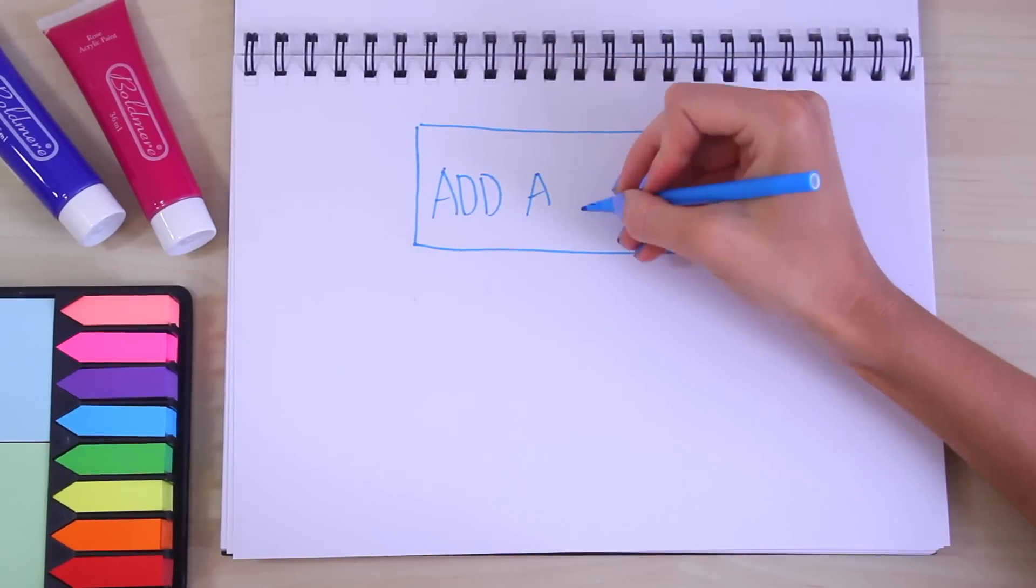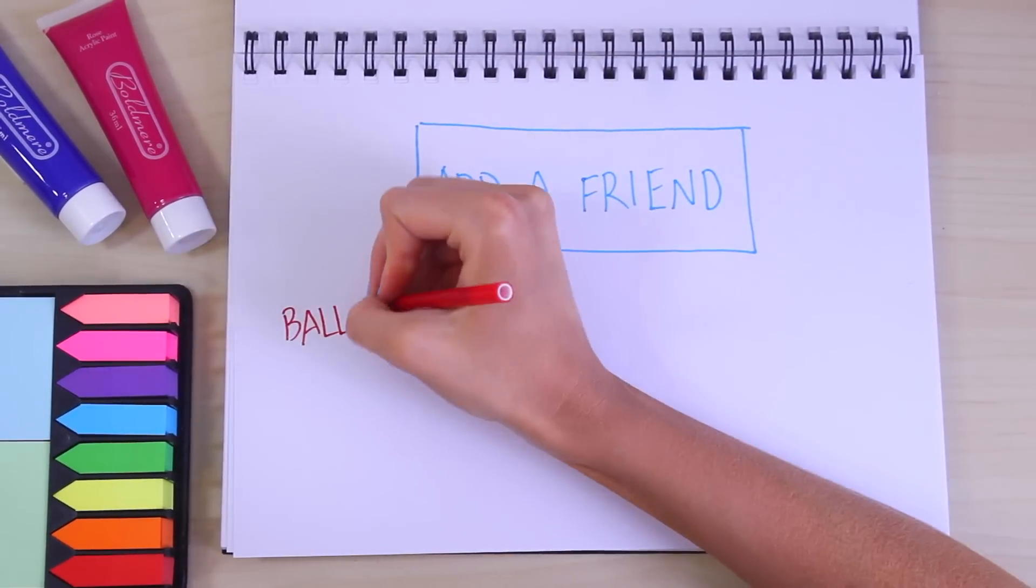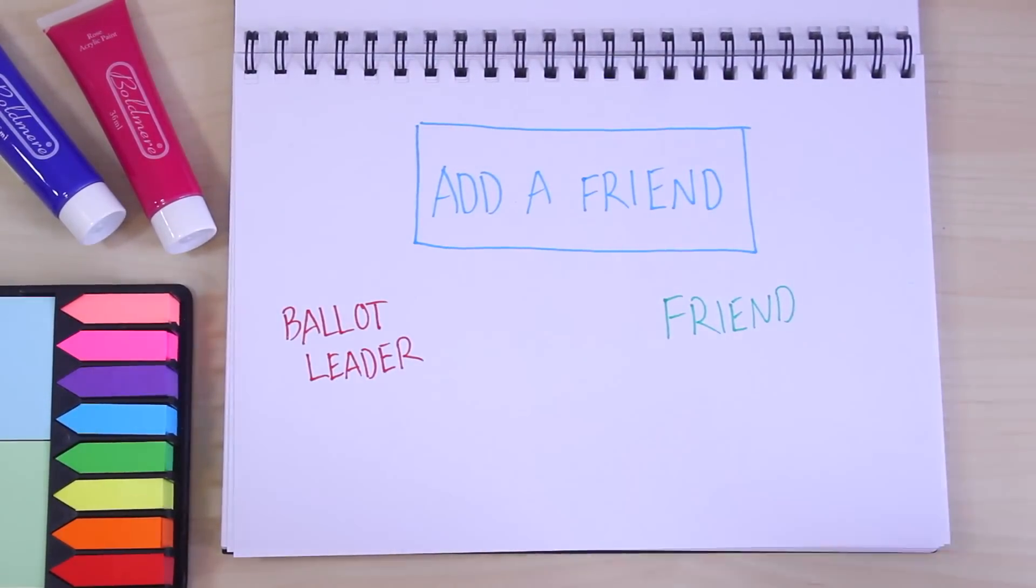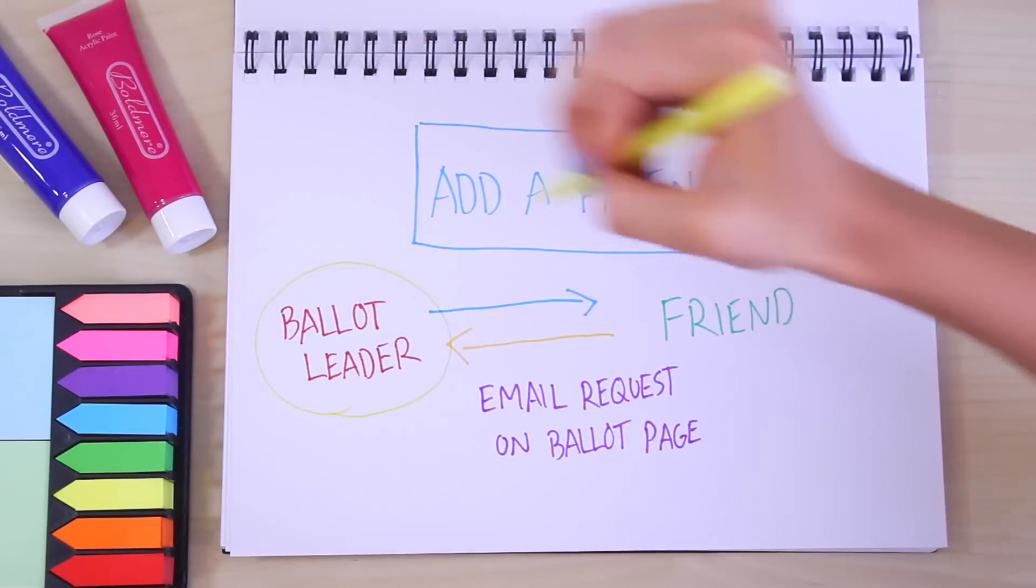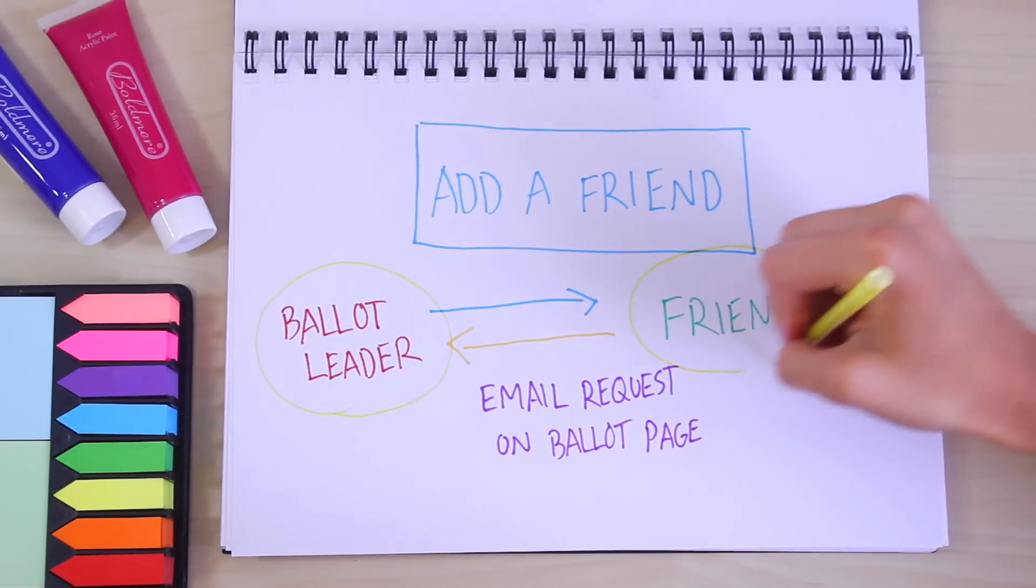Tom also had this function where you could add a friend to your ballot. So you'd have the ballot leader and the friend on the site. They would send an email request to each other, and their accounts would link. Then if the ballot leader won their ballot options, their friend would win the same ones.